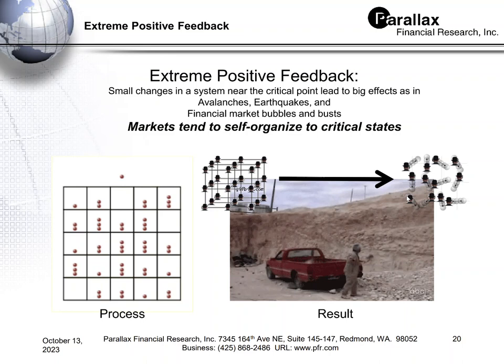Extreme positive feedback is what ends up causing critical failure in materials. The picture on the left is what they call a sand pile model, where a grain of sand falls into a matrix. When each square gets up to four grains of sand, it has a cascade — an avalanche — which loads up surrounding squares, and they avalanche when they reach four, and so on.